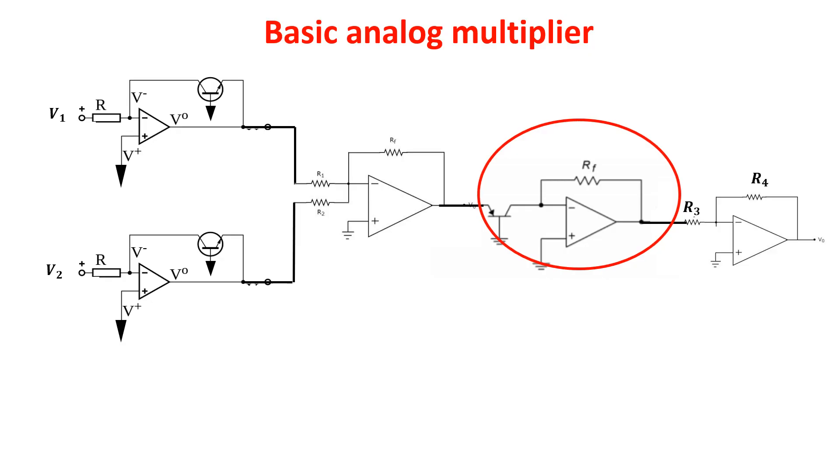The last stage inverts and cancels out the constant factor we don't want. So, at the end of the first stage, we find these signals. At the end of the second stage, there is this one.